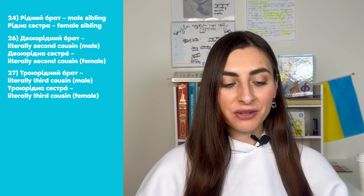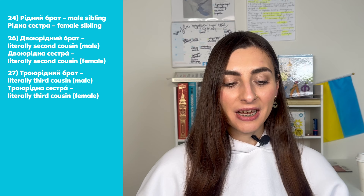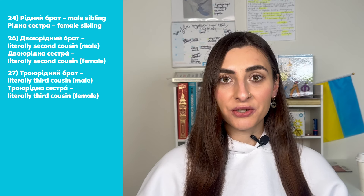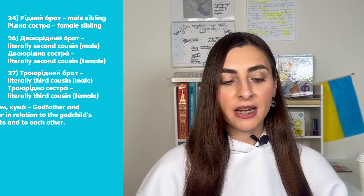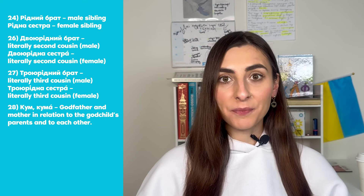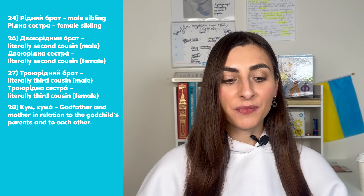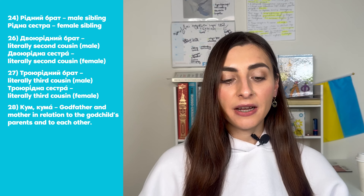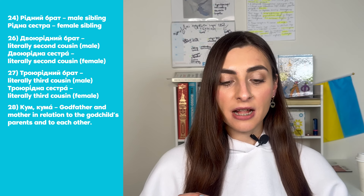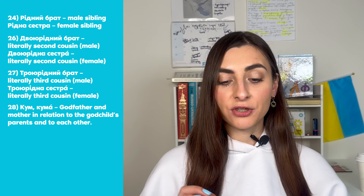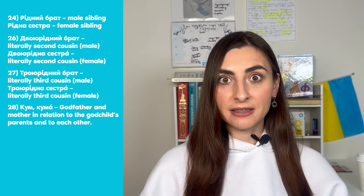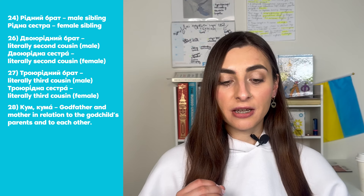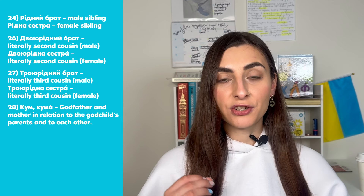Also, very interesting words that don't exist in English but do exist in Ukrainian: кум and кума. Кум is a godfather in relation to the godchild's parents and to each other. Кума is a godmother in relation to the godchild's parents and to each other.